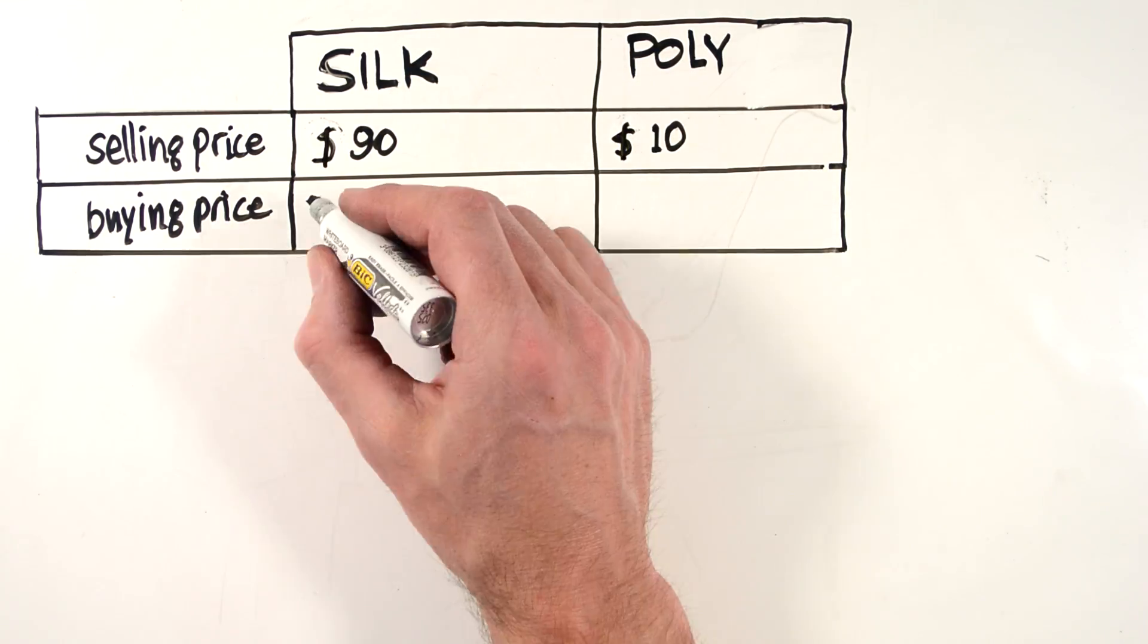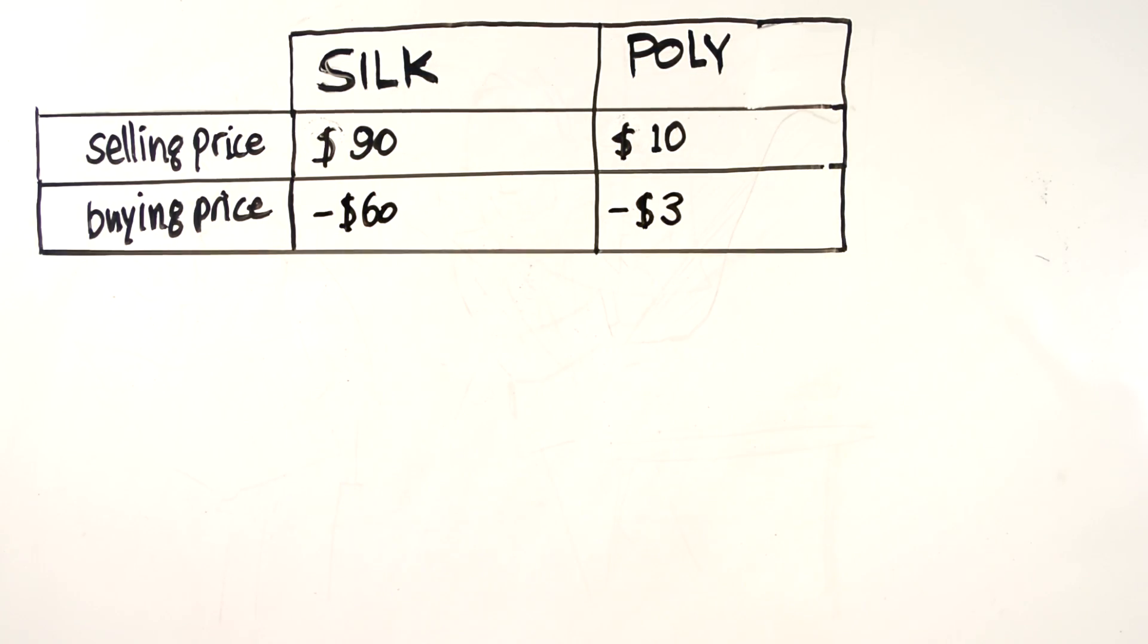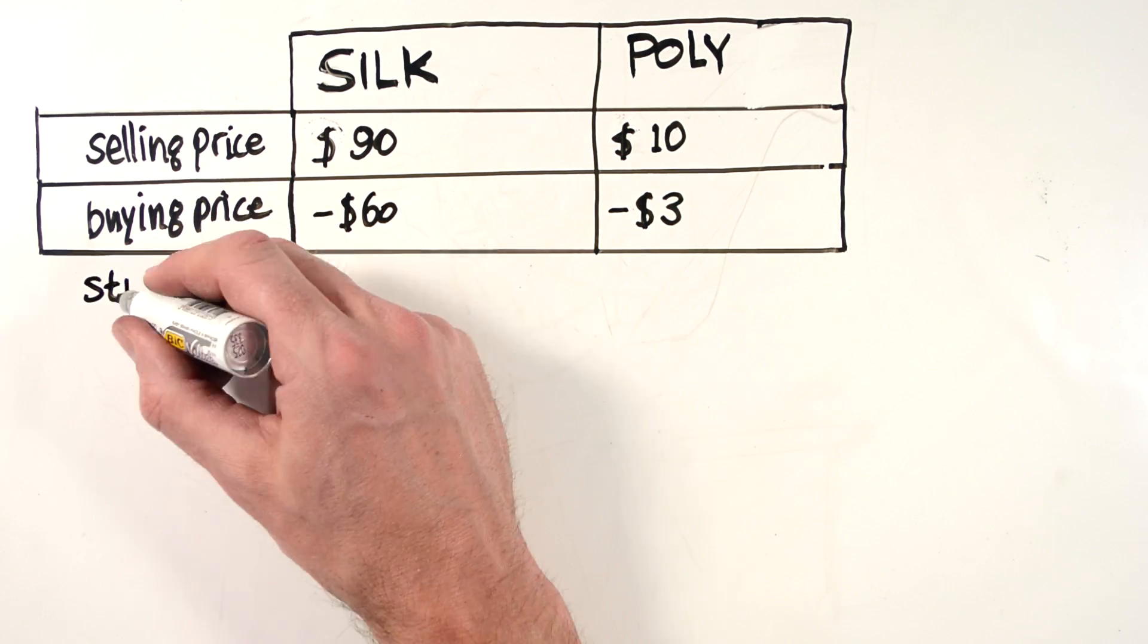The customer pays the selling price and some money goes to the factory which made the dress. What is important is the margin per piece expressed in dollars. Stuckdeckungsbeitrag. The abbreviation is DB.